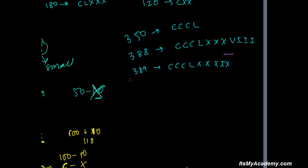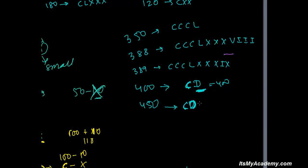For 400, you write D and put C in front: C D. D is bigger, so C on the left means subtracting — 500 minus 100 gives 400. For 450, write C D L: that's 400 plus 50. For 439, write C D and then add 39: C D X X X I X.